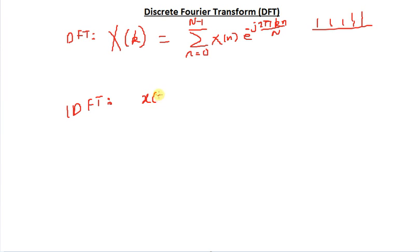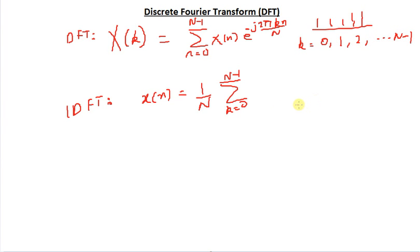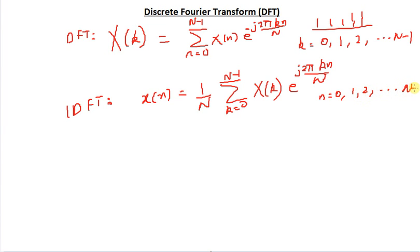Similarly, my synthesis equation is the IDFT — inverse DFT. This gives back x of N, the original discrete time sequence. This is equal to 1 over N, summation k equals 0 to N minus 1, where k goes from 0, 1, 2 and so on all the way to N minus 1. So these are my formulae to find the Fourier transform.